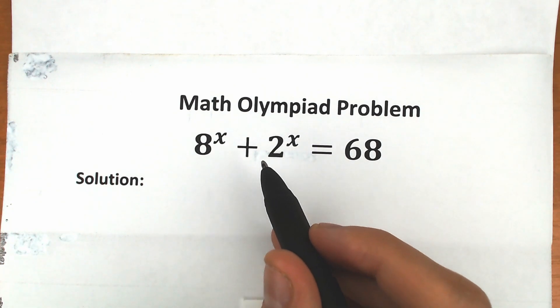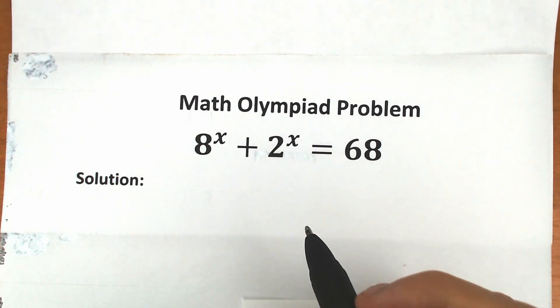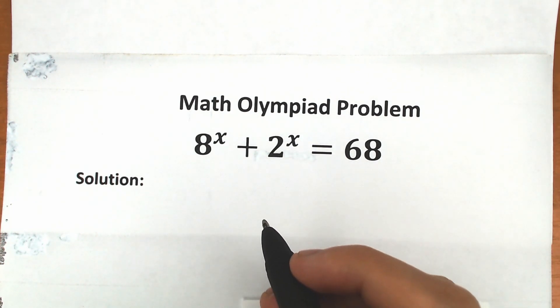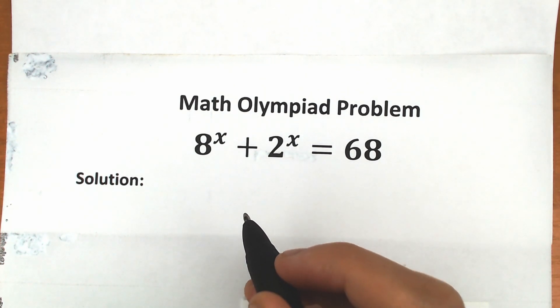8 to the x plus 2 to the x equals 68, and we need to find x. How can we do this?